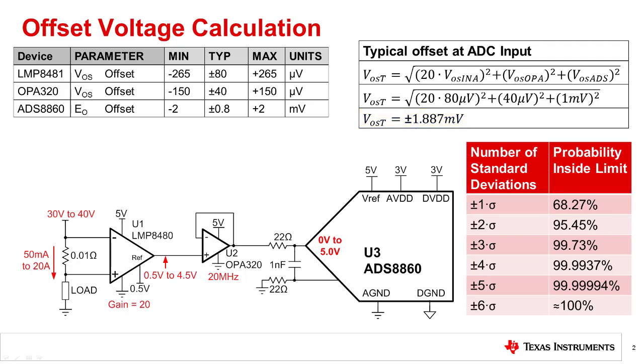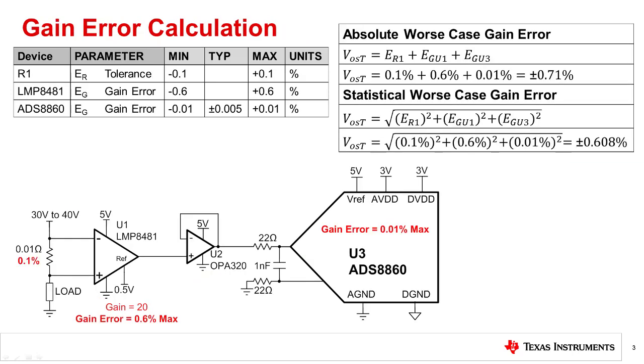To set a worst case limit, we can multiply the standard deviation by the appropriate factor from the table according to the system requirements. For example, if we set the system maximum specification to plus or minus three standard deviations, then 99.73% of the population will be inside that limit, and 0.27% of the population will fail the limit. Depending on the requirement, a more conservative limit can be set.